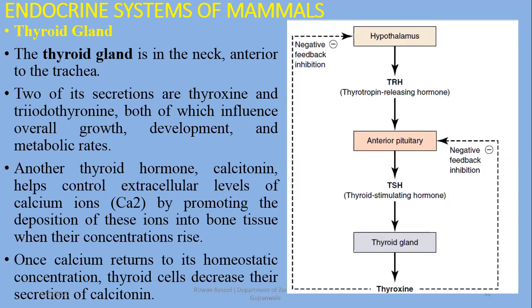There is another thyroid hormone — not an amino acid derivative but a polypeptide hormone — calcitonin. It helps control extracellular levels of calcium ions and regulates blood calcium levels by promoting the deposition of calcium ions into bone tissues when their concentration rises.